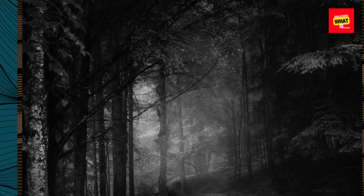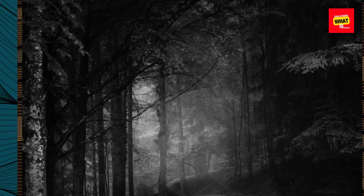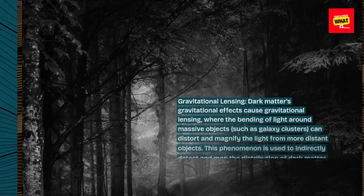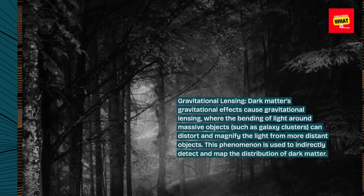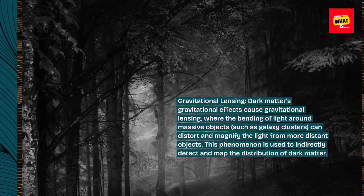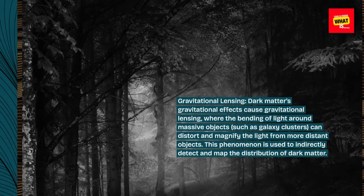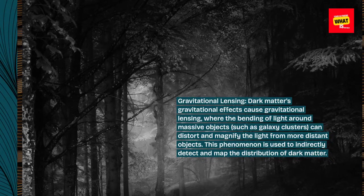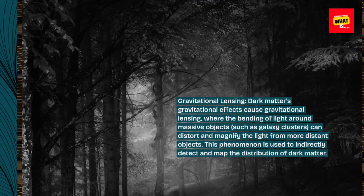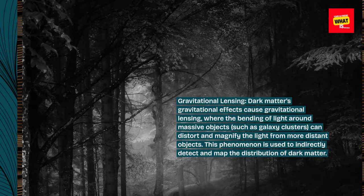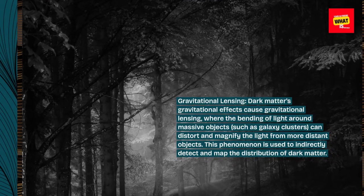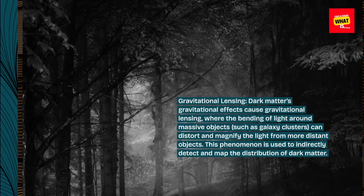Dark matter's gravitational effects cause gravitational lensing, where the bending of light around massive objects, such as galaxy clusters, can distort and magnify the light from more distant objects. This phenomenon is used to indirectly detect and map the distribution of dark matter.